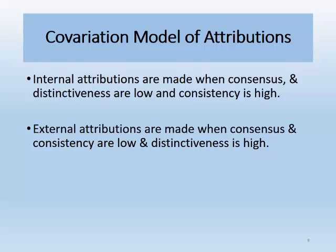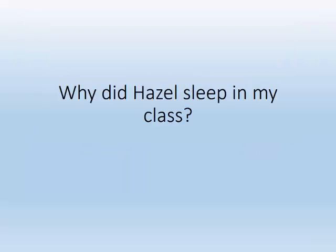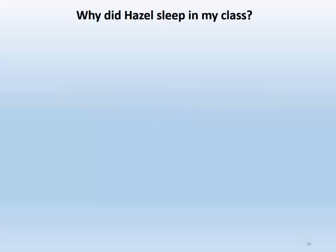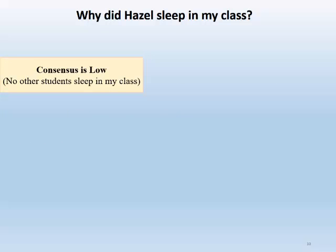Let's look at some simple examples to demonstrate these concepts. Imagine you teach a college class and notice that Hazel slept through your Tuesday class. You'll probably wonder about Hazel's behavior and either make an internal or external attribution that explains Hazel's sleeping. According to the covariation model, if you have had multiple chances to observe Hazel in class, you'll consider consensus, distinctiveness, and consistency information. So imagine no other students fall asleep in my class — consensus is low.